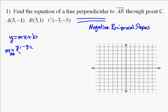So the first thing to do is find the slope of AB. We'll use the slope formula, y1 minus y2 over x1 minus x2. And so I need to subtract those, and it's going to give me negative 1 minus 1 all over 3 minus 3.